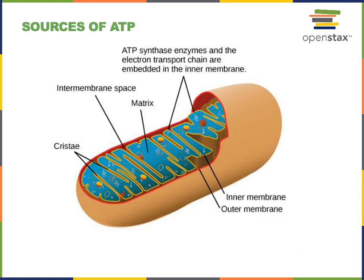NADH will carry electrons into the electron transport chain within the mitochondria. The electron transport chain is a series of enzymes embedded in the inner mitochondrial membrane that will carry out reduction oxidation reactions, starting with high energy electrons from NADH that will be passed down to reduce another oxidizing agent, until eventually oxygen will accept the high energy electrons from NADH in a reaction catalyzed by cytochrome c oxidase, and oxygen will be reduced to form water.